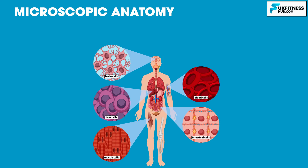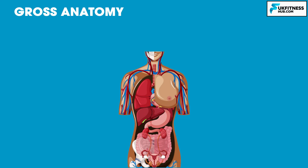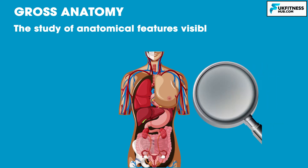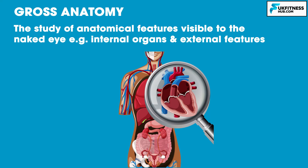Microscopic anatomy is the study of minute anatomical structures on a microscopic scale, including cells (cytology) and tissues (histology). Finally we have gross or macroscopic anatomy: the study of anatomical features visible to the naked eye, such as internal organs and external features.